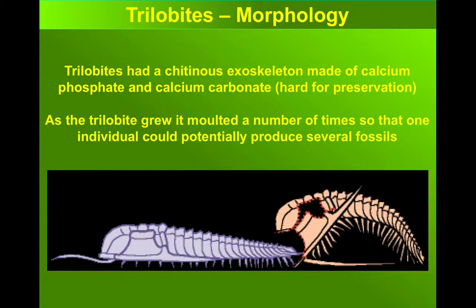As a result, an individual trilobite animal can actually preserve several different fossils showing different stages of growth, maybe even looking quite different from its juvenile to its adult form.